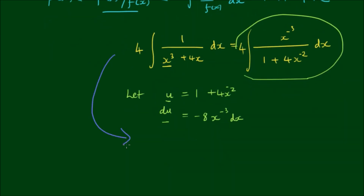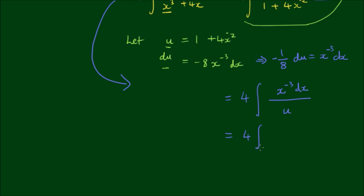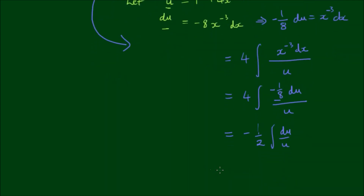So the integral equals 4 times the integral of x to the negative 3 times dx over u. We have negative 1/8 du equals x to the negative 3 dx. Substituting, we get 4 times the integral of negative 1/8 du over u. The coefficient comes out front giving us negative 4/8, which equals negative 1/2 times the integral of du over u. The result of this is negative 1/2 times the natural log of u plus c.